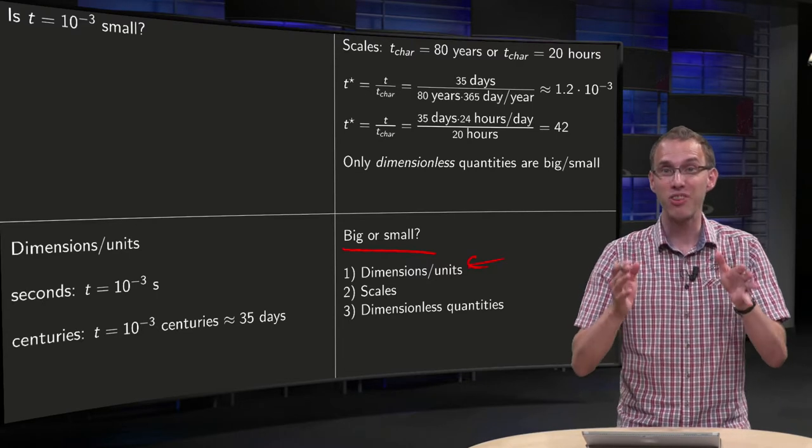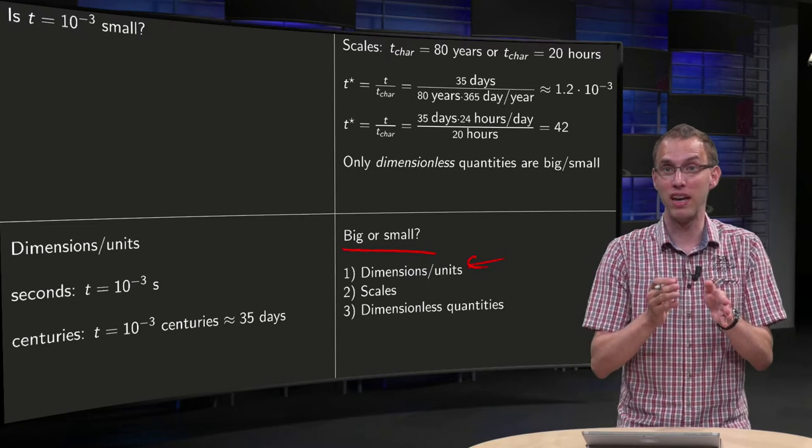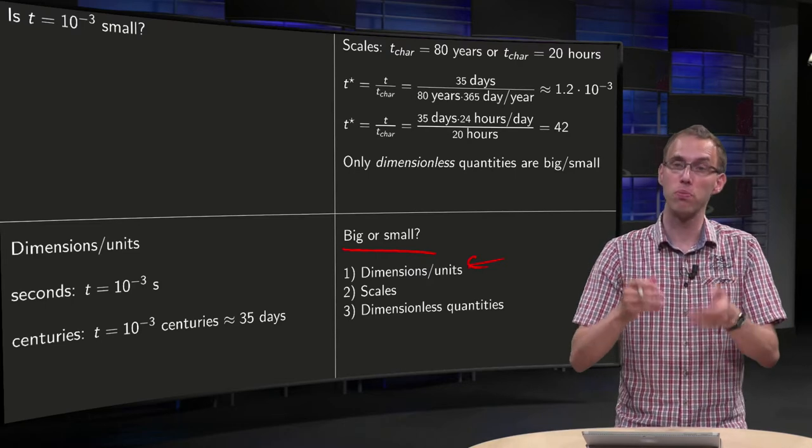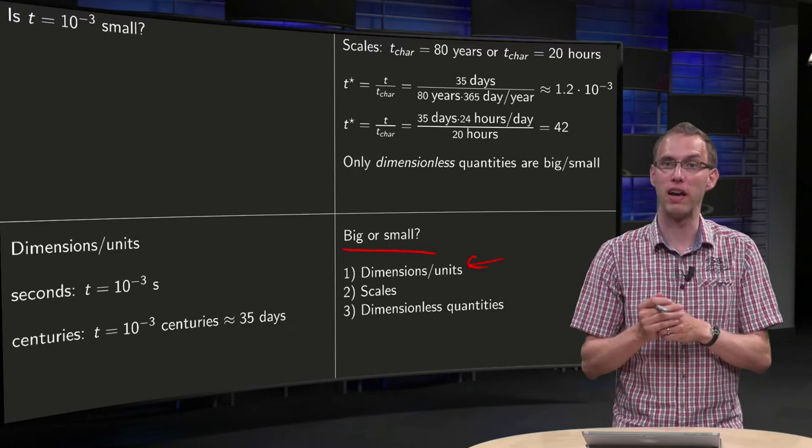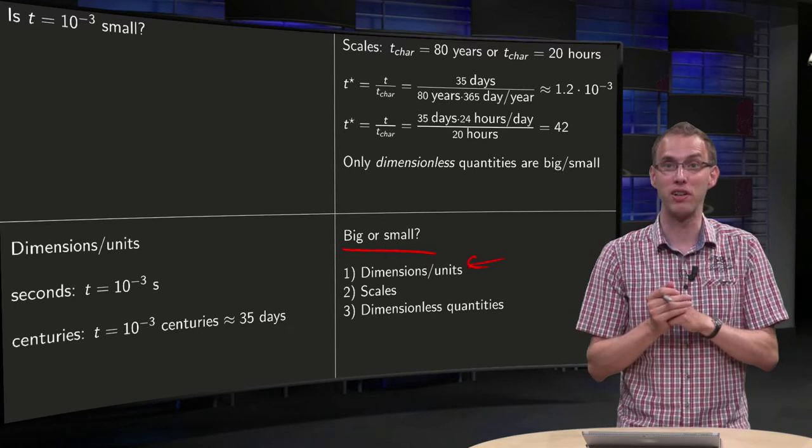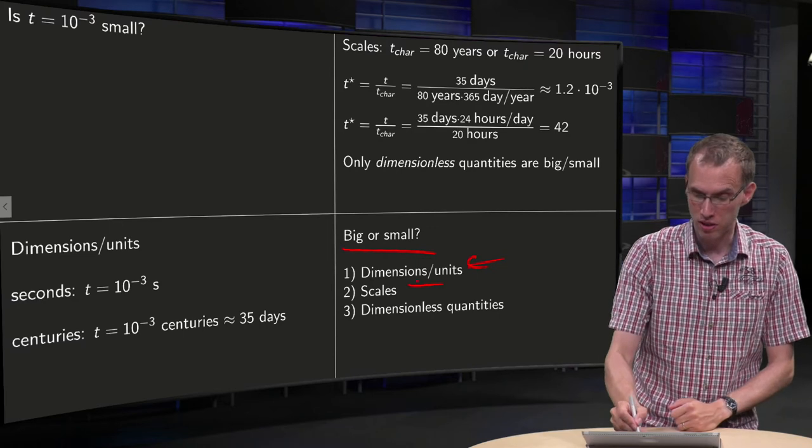Second question, at what characteristic scale are you looking? 35 days can be either small if you look at the human life span, or large if you look at our poor fly, so you have to look at the scale.